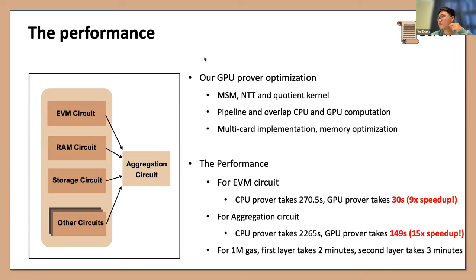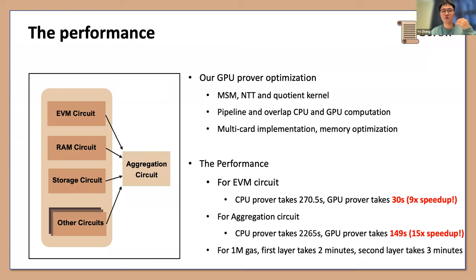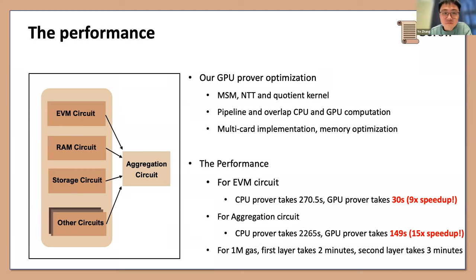Audience: What is the RAM size required? Speaker: The CPU RAM requirement is over 500 gigabytes. The GPU only requires about 8 gigabytes of memory, so you can use some lower-end GPUs, but the CPU requirement is very high because you need to do witness generation on CPU. Polygon Hermez also uses very large CPU with over 500 gigabytes of memory.